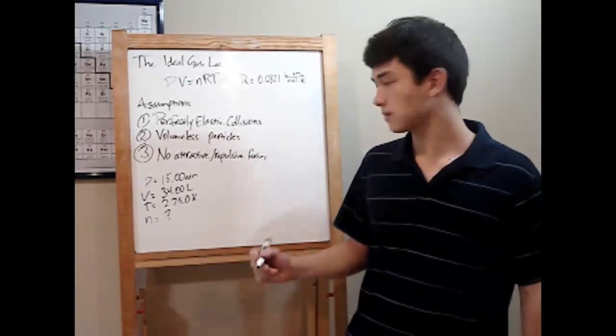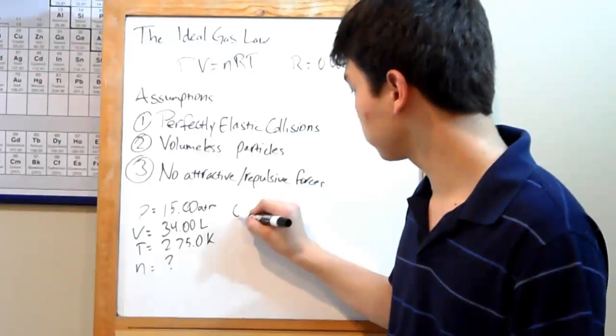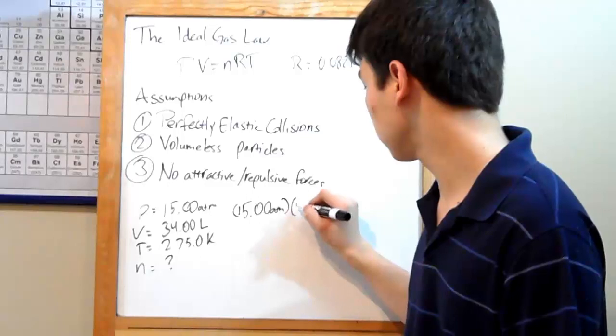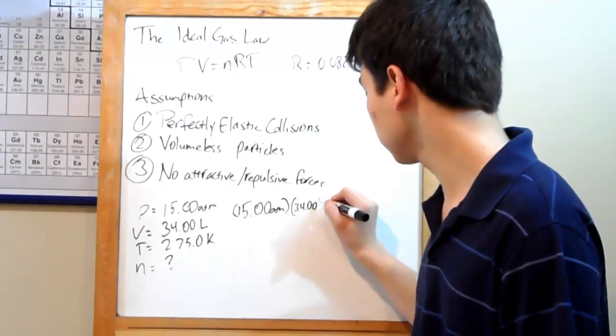Plug in: P, pressure, 15.00 atmospheres. V, volume, 34.00 liters.